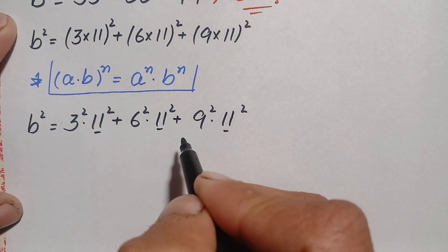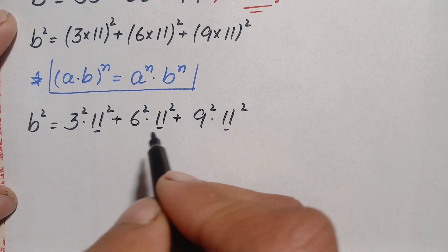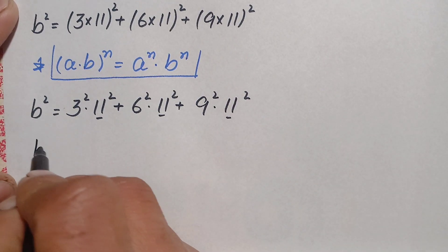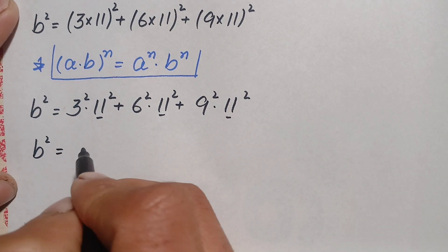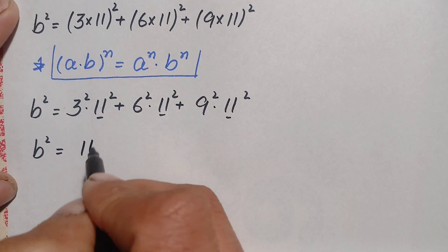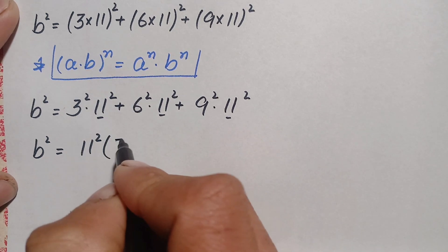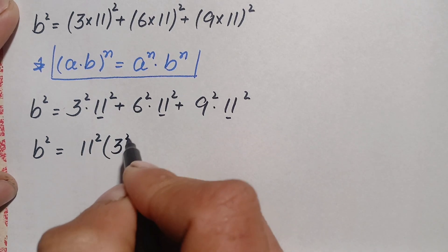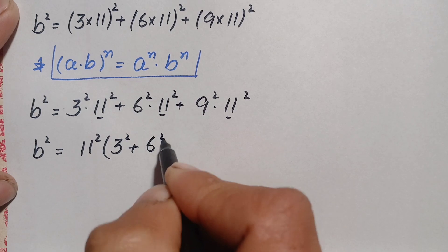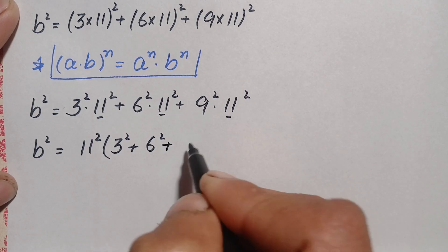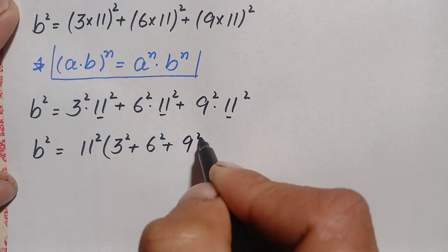Since 11² is common in all three terms, we factor it out. This gives us b² = 11² × (3² + 6² + 9²).